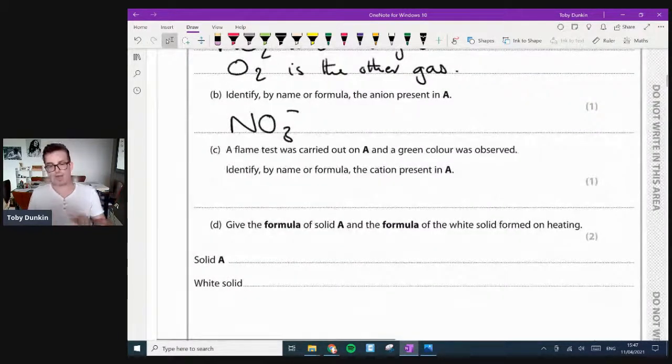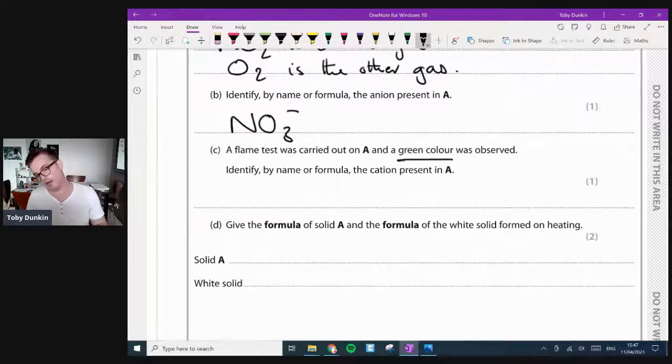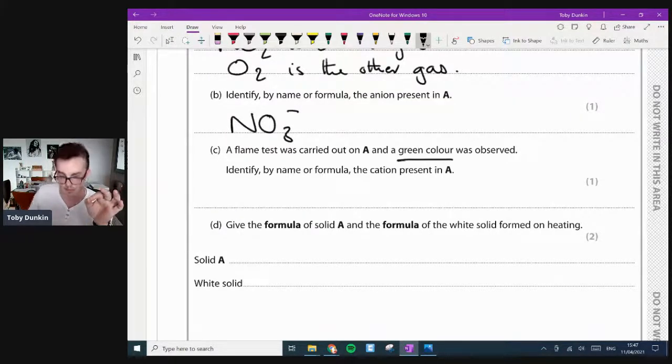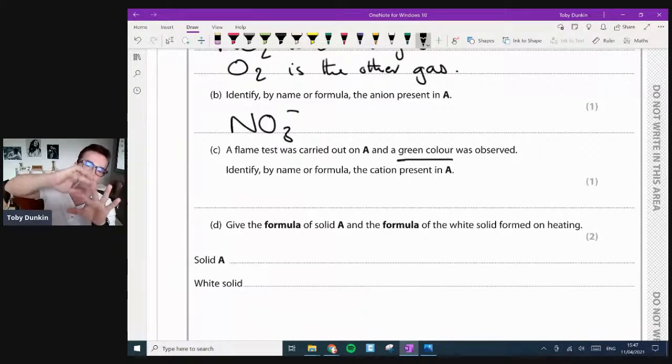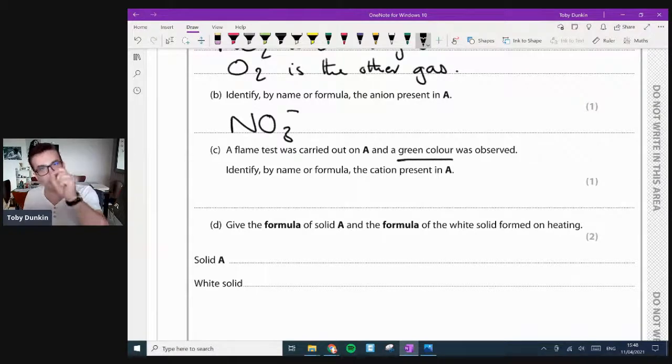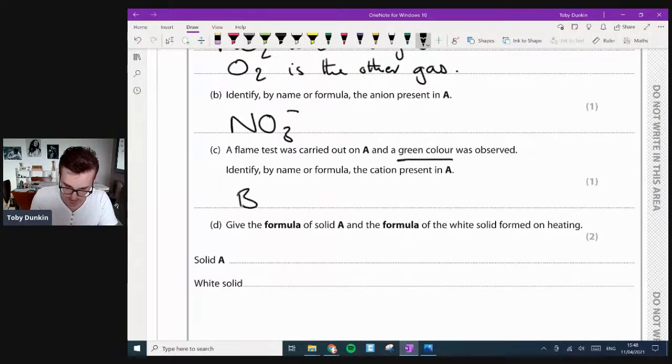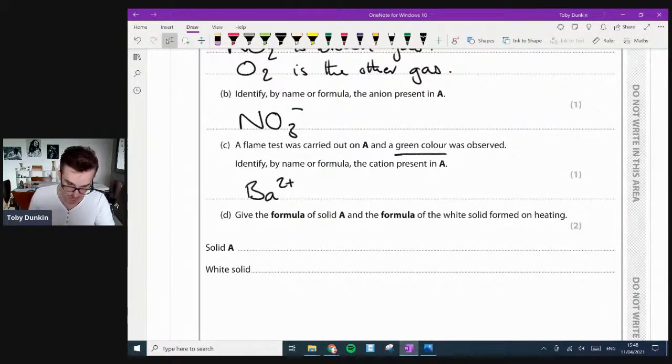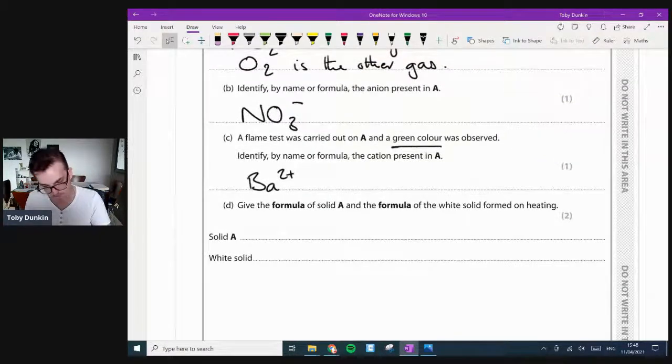Identify by name or formula the anion present. So if it was NO2, then this must have been a nitrate. Now if you decide to go for the name, then it needs to be nitrate ion. But by formula, you need the minus. So NO3 minus. Lots of people put NO3 and they forget their charge. Just be aware. The flame test was carried out and a green colour was seen. Now if it had been green-blue, I would have said copper. But this is green.